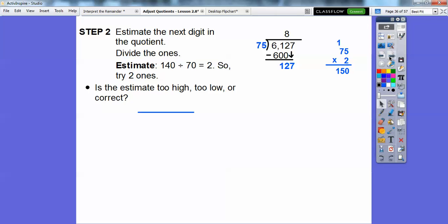The estimate is too high again. We'll adjust the number. We'll go down to 1, so 75 times 1. This should be safe. 127 minus 75 gets us 52.